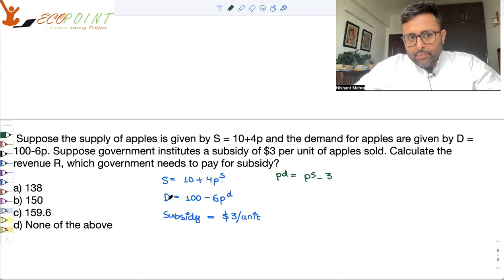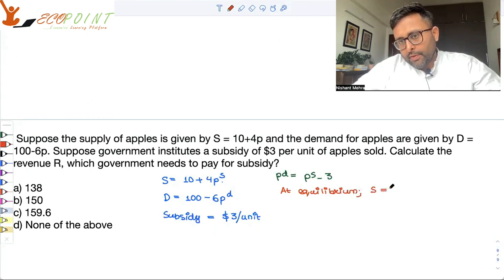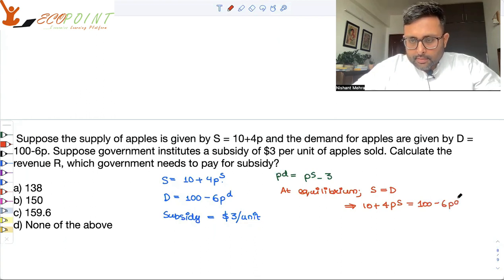At equilibrium, demand is equal to supply. So that would mean 10 plus 4ps equals 100 minus 6pd. I can plug in the values. I can write everything in terms of pd or ps, whichever way.